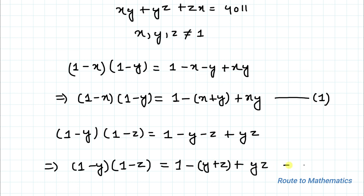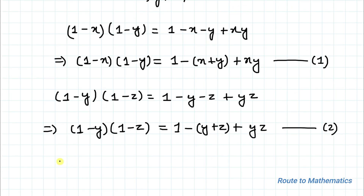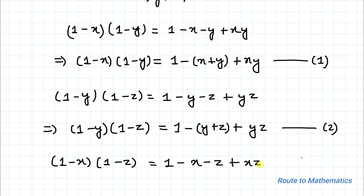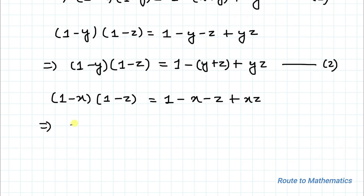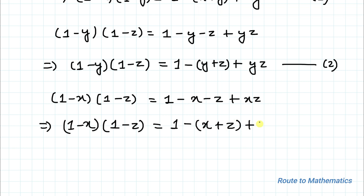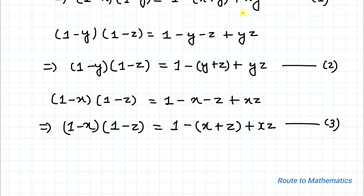Now multiplying the denominator of the first term (1-x) with the third term (1-z): we get 1 minus x minus z plus xz. This implies (1-x)(1-z) equals 1 minus (x plus z plus xz). Let's take this as equation 3.